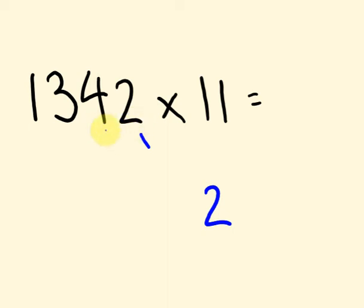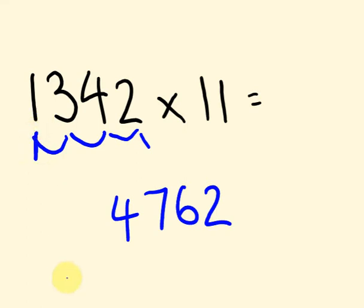And then what you do is you add these two numbers together. Two plus four is six. That's the next one. Three plus four is seven. One plus three is four. And then the last number, the first number of your answer is going to be this one. There you go. The answer, 14,762. That's pretty easy, right?